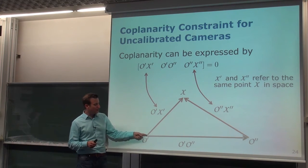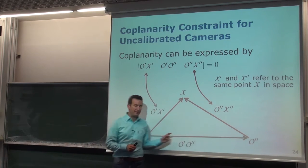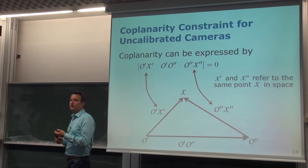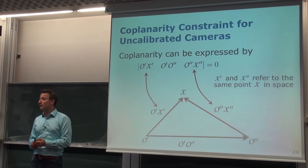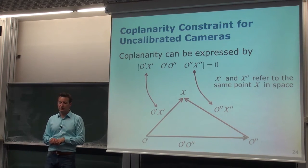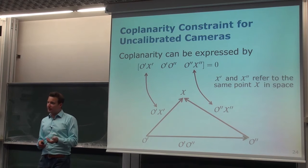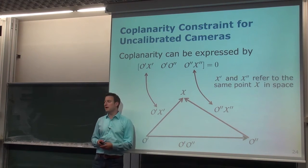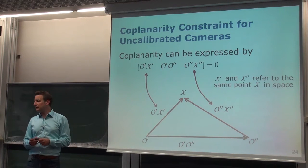What we want to do now is describe those vectors using quantities from the projection matrices of our cameras, and then use this to derive constraints. The key constraint is that we know these three vectors lie in one plane in the 3D world.